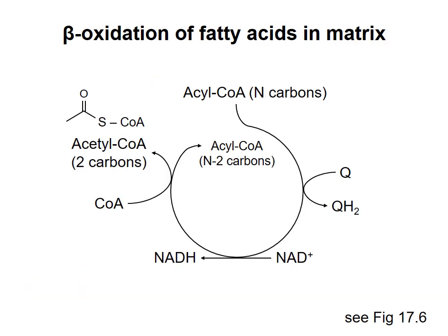The beta-oxidation process contains four reactions that repeat until all carbons are converted to acetyl-CoA. The diagram assumes a starting fatty acyl chain with an even number of carbon atoms, represented by the letter N. In each set of four steps, four electrons are removed from carbon: two are put onto coenzyme Q to make QH2, and two electrons are put onto NAD+ to make NADH. Also, two carbons are removed from the fatty acyl chain to produce acetyl-CoA, leaving a fatty acyl-CoA that is two carbons shorter than the one we started with.